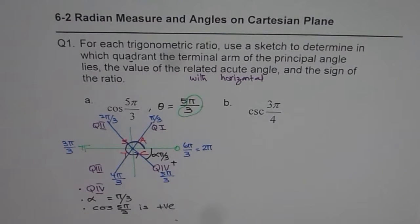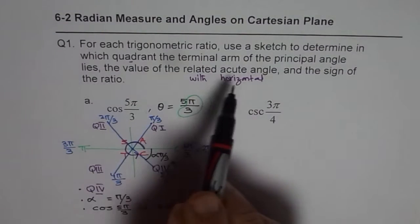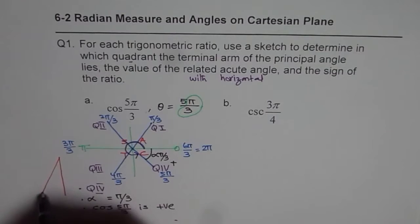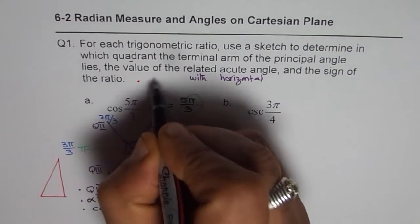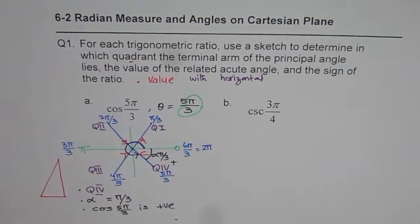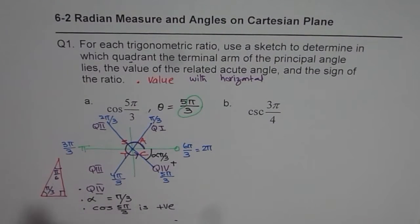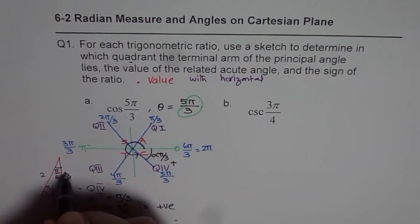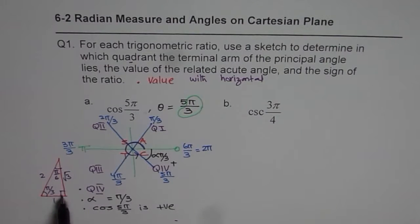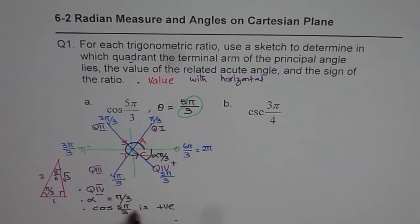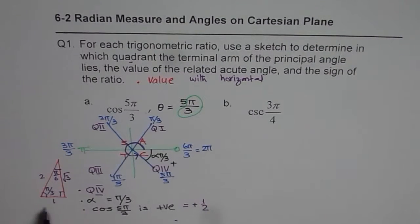If we also want to find the value using special angle triangles, we draw the 30-60-90 triangle — that is pi by six, pi by three, and pi by two. Cosine of pi by three is adjacent over hypotenuse, which equals one half. So cos(5π/3) = positive one half. We are not asked for this value, but it is useful to know.